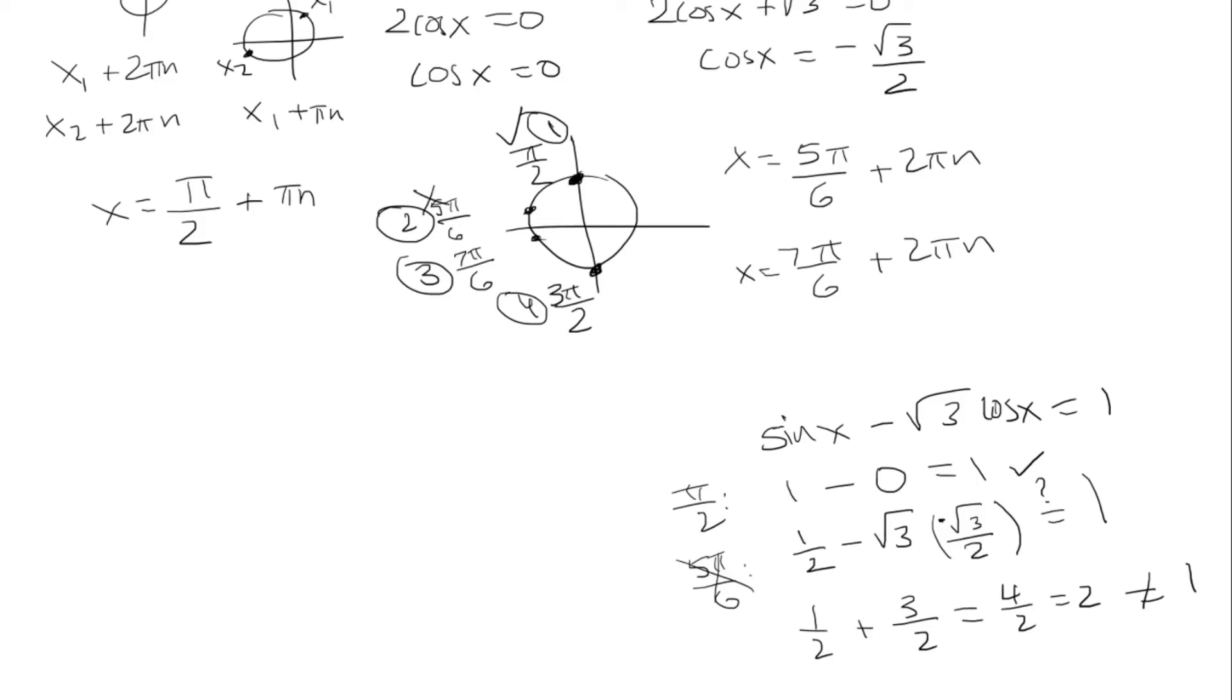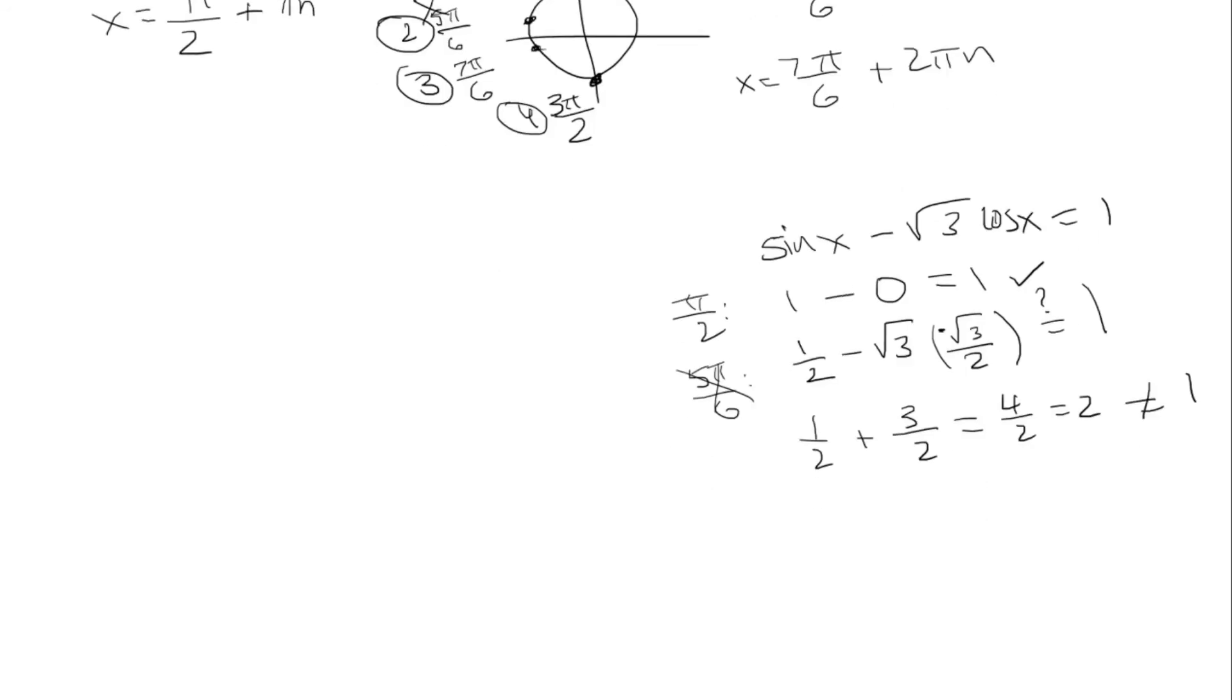Okay, so we have two more to check. The next one is 7 pi over 6. So we have sine of 7 pi over 6, that's negative 1 half minus root 3. Cosine of 7 pi over 6 is negative root 3 over 2. And we want to see if that is equal to 1. Well, you have negative 1 half and then plus 3 over 2, which is 2 over 2, which is equal to 1. So that does work.